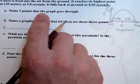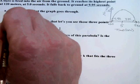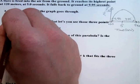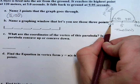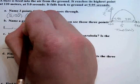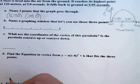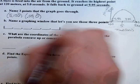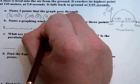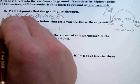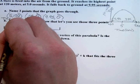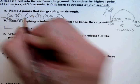So name three points that the graph goes through. We know the vertex is 5, 120. We know this point right here, which is 0.05 seconds and a height of 0. We know 9.95 and a height of 0. Remember, we're thinking about time being the x and height being the y.